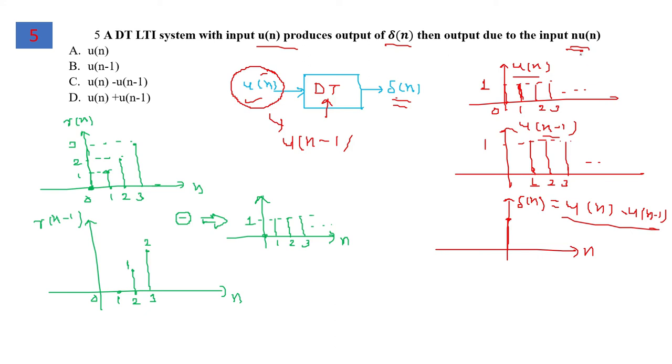In the second case, if input is nu(n), which is a ramp signal, it will be one time shifted towards the right and then subtracted, giving a signal starting from n equals 1 going to infinity. The equation becomes u(n-1). For question 5, the answer is u(n-1), option B.